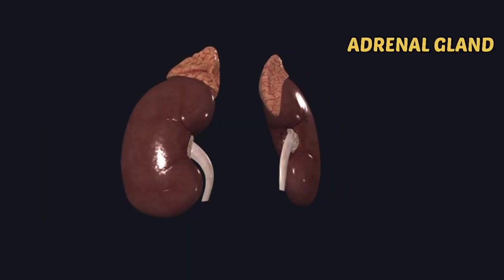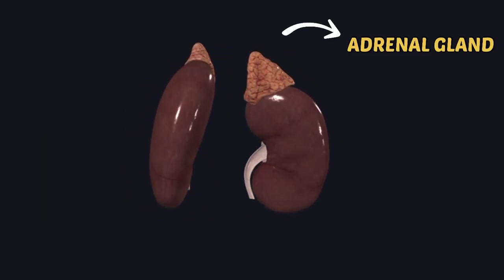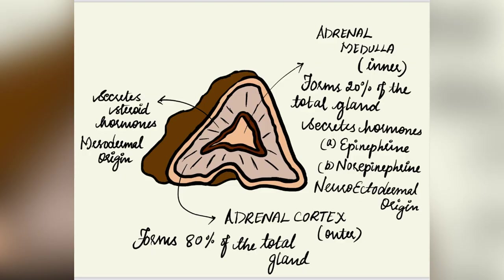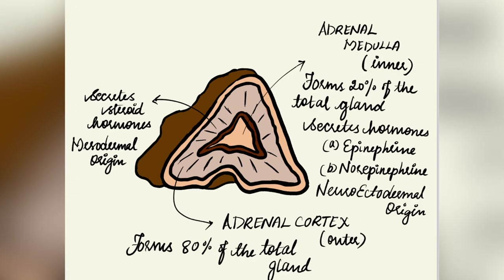What is adrenal androgen, doctor? Adrenal androgen is a sex hormone produced by the adrenal cortex, which is the outermost part of the adrenal gland. A pair of adrenal glands, also called suprarenal glands, lies at the top of the kidney. The adrenal consists of two distinct endocrine glands: the inner adrenal medulla and the outer adrenal cortex. Adrenal medulla forms 20% of the total gland, developing from neuroectodermal tissue. Adrenal cortex forms about 80% of the gland, develops from mesodermal tissue, and secretes steroid hormones.